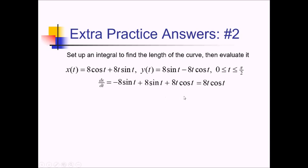Let's do dy over dt now. This will be 8 cosine of t instead of 8 sine of t. And now we have another product rule, and both products are going to get subtracted. So we're going to have negative 8t's derivative times cosine of t, which is negative 8 cosine of t. And then we also have negative 8t times the cosine of t, which gives us positive 8t sine of t. The cosines cancel, so this is just 8t sine of t.